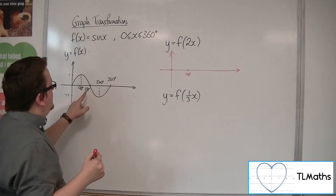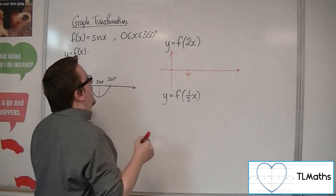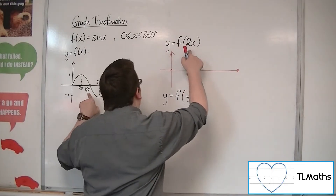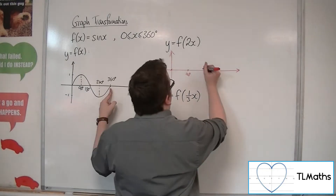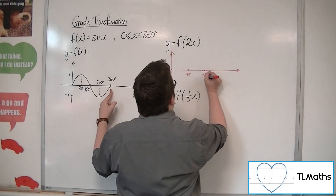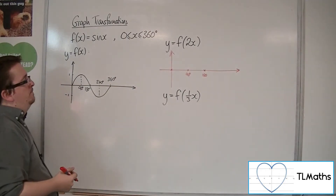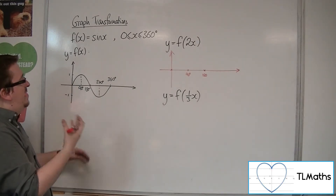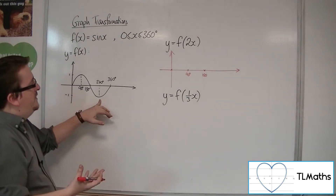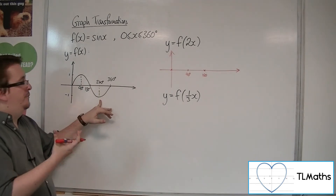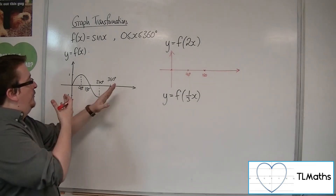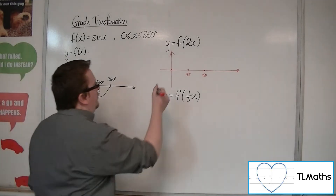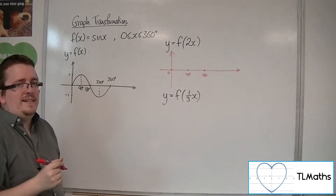When x is 180, we know that we've got f of 2 lots of 180, which is f of 360. f of 360 is 0. So that's when x is 180. By that point, when x is 270, we get f of 540, which is outside the range of our graph. So the graph doesn't exist past that point. The curve must be just between 0, 90, and 180.